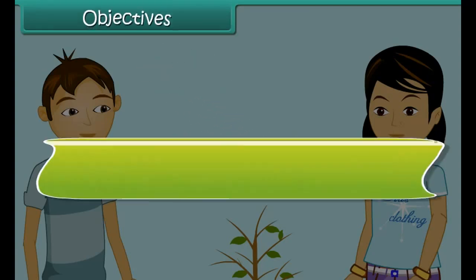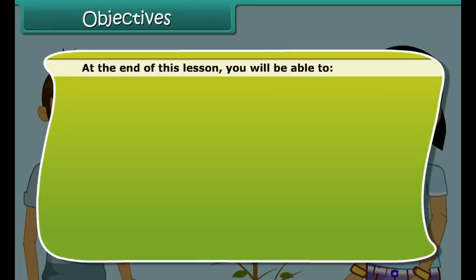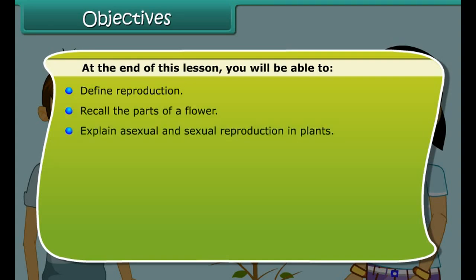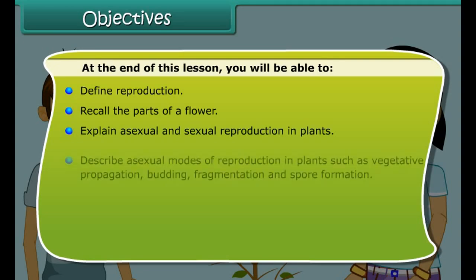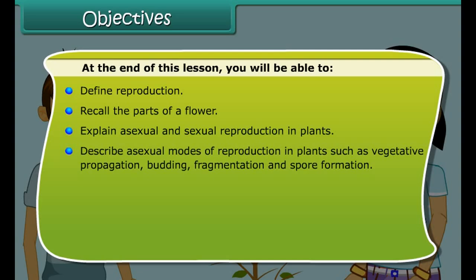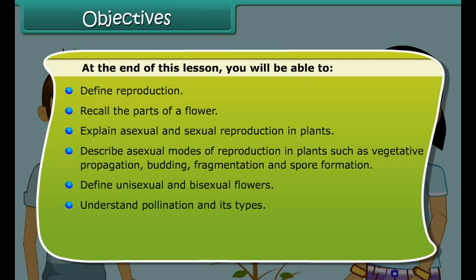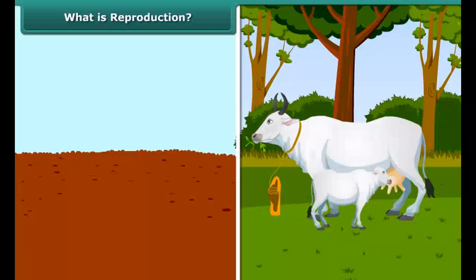Objectives. At the end of this lesson, you will be able to: define reproduction; recall the parts of a flower; explain asexual and sexual reproduction in plants; describe asexual modes of reproduction in plants such as vegetative propagation, budding, fragmentation and spore formation; define unisexual and bisexual flowers; understand pollination and its types; explain formation of a zygote; discuss seed dispersal in plants.